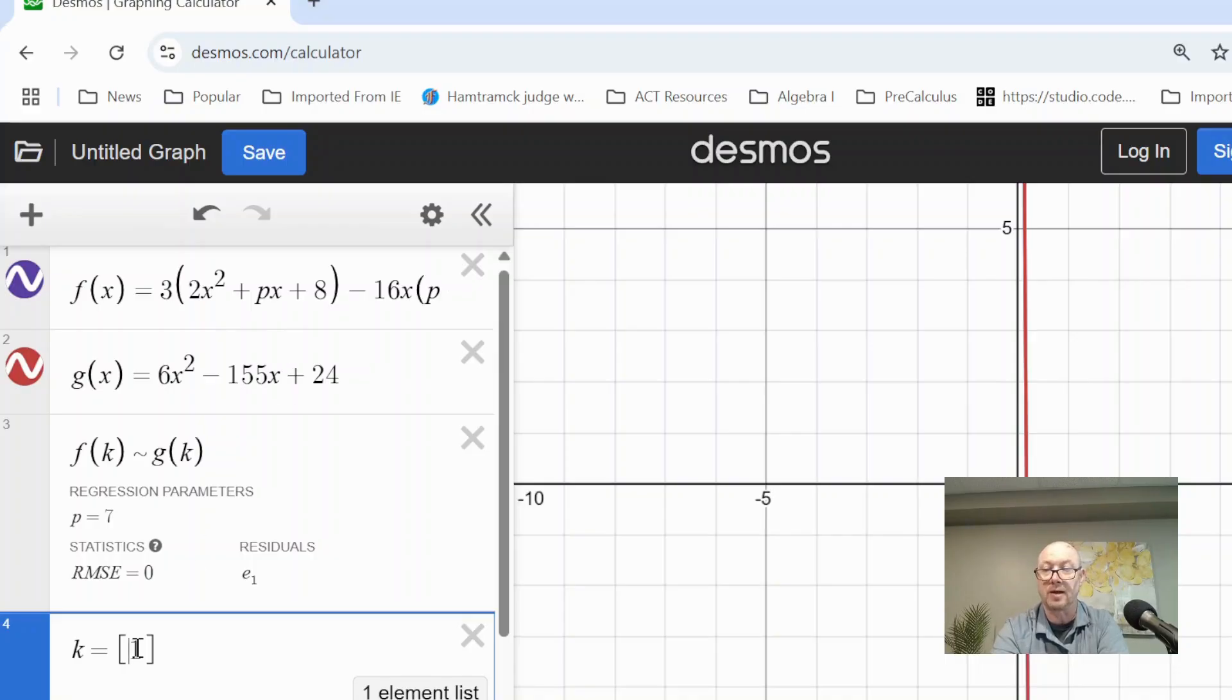Now watch. I'll show you how it works for any number k in the set. So if I put in 56, I still get p equals 7. So I get the correct answer.